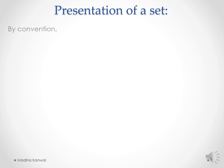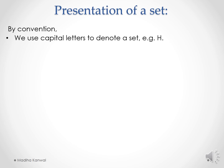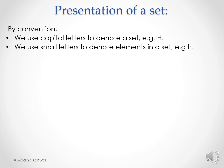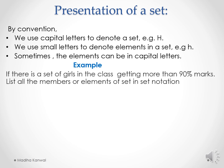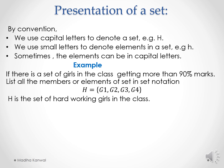By convention, we use capital letters to denote a set — for example, capital H — and small letters to denote elements in a set — for example, small h. Sometimes elements can be in capital letters. For example, if H is the set of girls getting more than 90% marks, and you list all members in set notation, capital H is the set and G1, G2, G3, G4 are its elements.